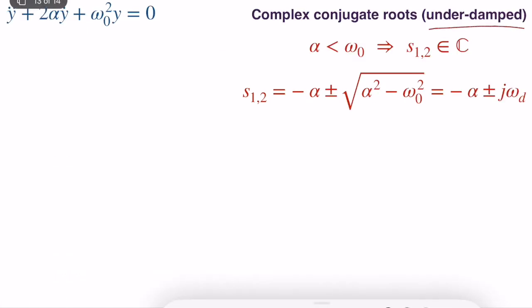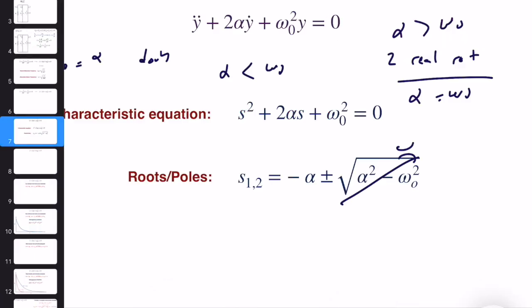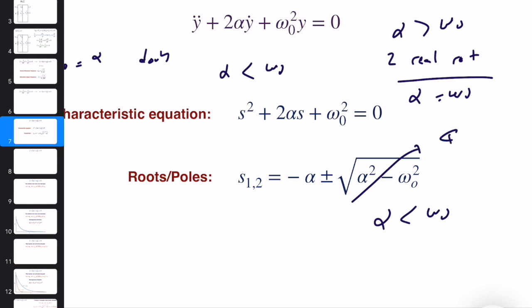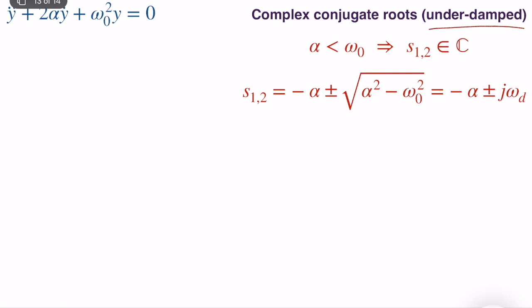Case 3: Under-damped — alpha is less than omega-zero. The quantity under the square root becomes negative, giving two complex conjugate poles: S₁,₂ = −α ± jω_d, where j is the complex unit (we use j in electrical engineering to avoid confusion with current i) and ω_d is called the damped natural frequency or damped resonant frequency. This frequency determines the oscillations in the response.